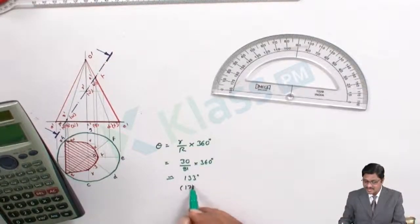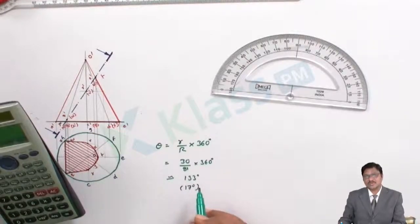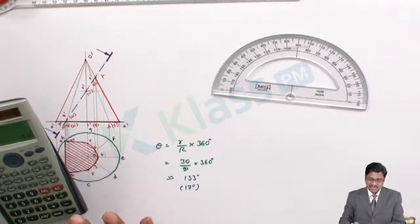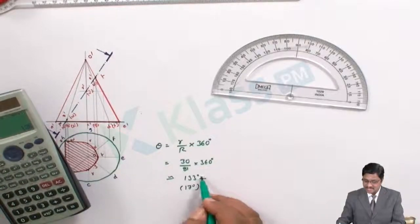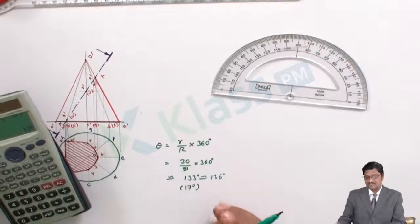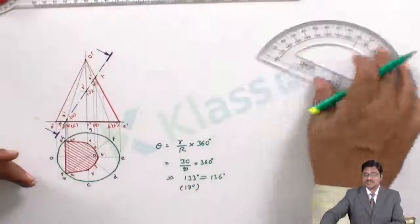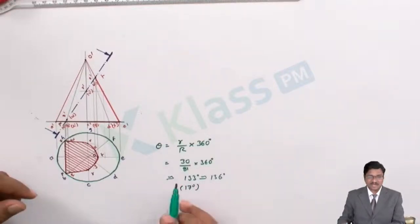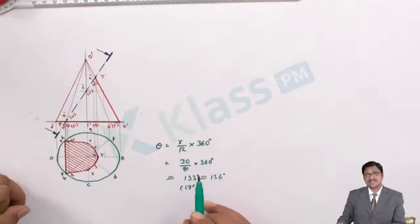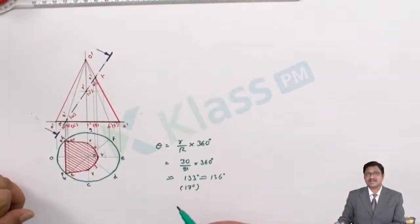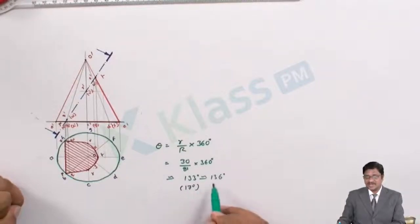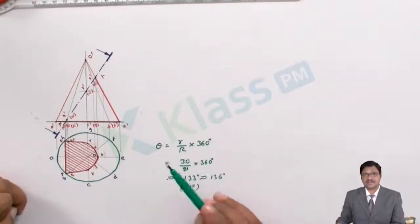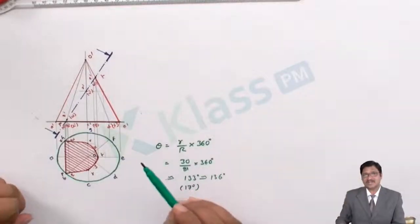Using 17 degrees per division gives 136 degrees total — this is the approximated sector angle. The construction requires rounding to the nearest measurable value; the calculation part can show the exact 133 degrees, but for construction use 136 degrees. Once the slant length of 81 mm and sector angle of 136 degrees are known, draw the development of the surface.